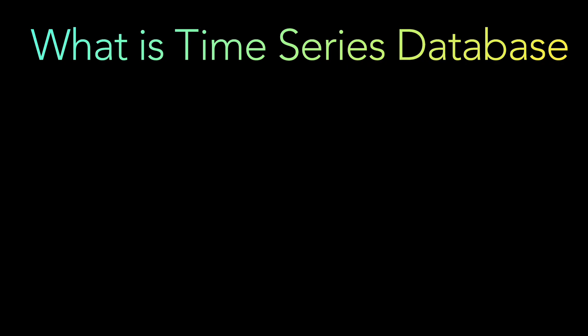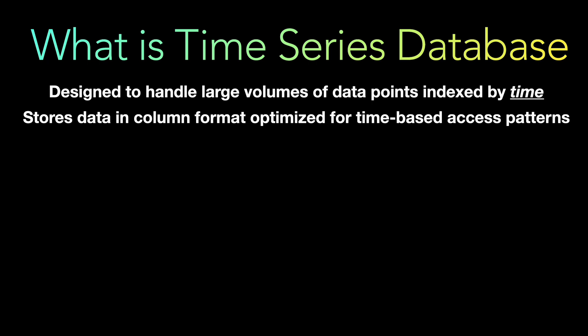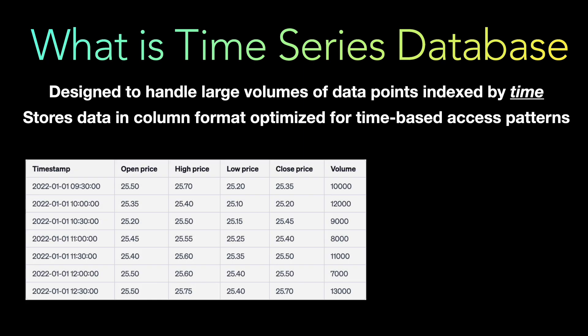What is a time series database? A time series database in simple terms is designed to handle large volumes of data points which are indexed by time. The data is stored in a columnar format which is optimized for time-based access patterns. If you take a look at a sample database with time series data, in this database you can see there are six columns. The first one is the timestamp, which is the main important column in this database.